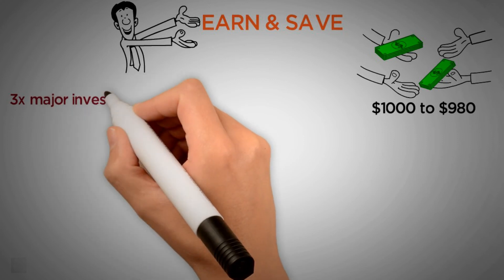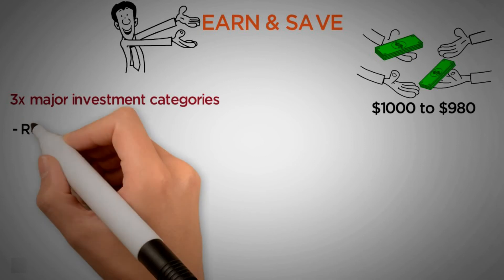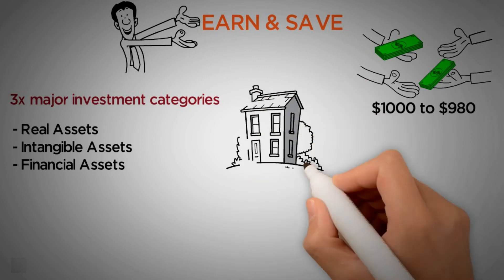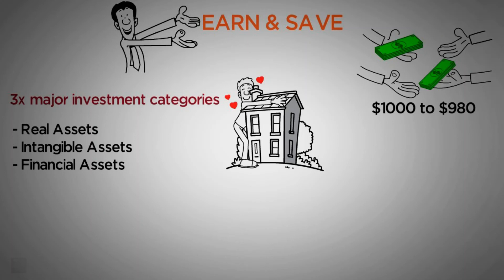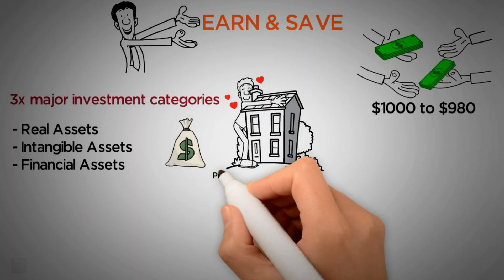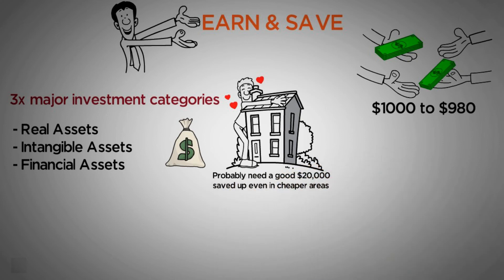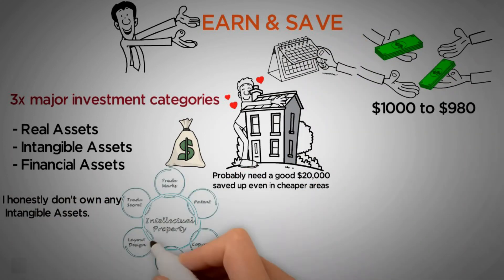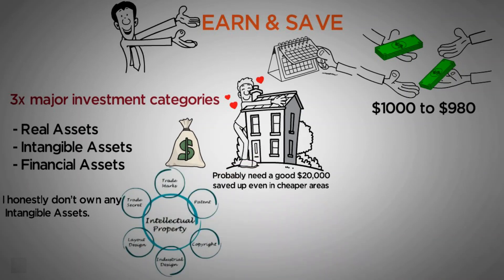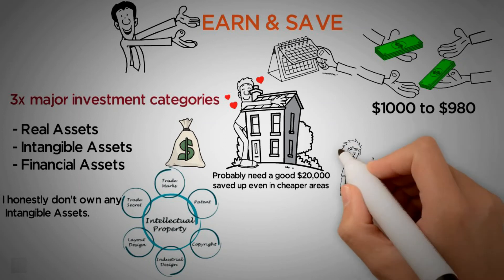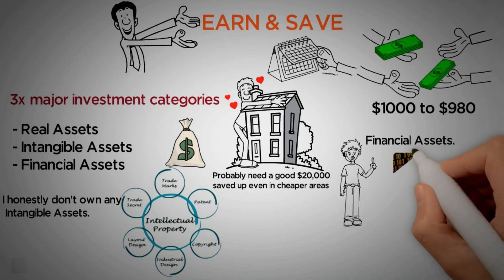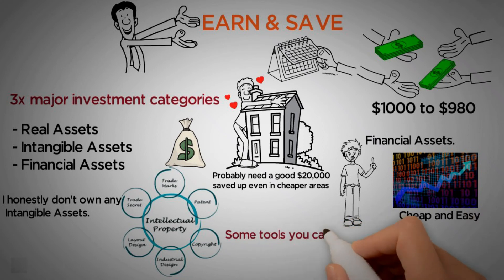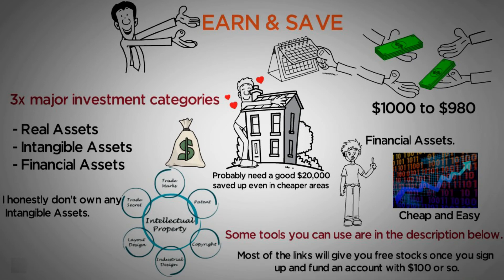There are basically three major investment categories that you can go for: real assets, intangible assets, and financial assets. My favorite and most recommended form of investing is real estate, a real asset, although real estate investing is capital intensive — you probably need a good $20,000 saved up even in cheaper areas, which can take quite a while for a lot of people. I honestly don't own any intangible assets — these are things like intellectual property, patents, and copyrights, for instance — maybe this YouTube video. The easiest major investment category to get into is financial assets. Stocks are the big one: cheap and easy to get started on. Some tools to use are in the description below; most of the links will give you free stocks once you sign up and fund an account with $100 or so. All this to protect your money against inflation.